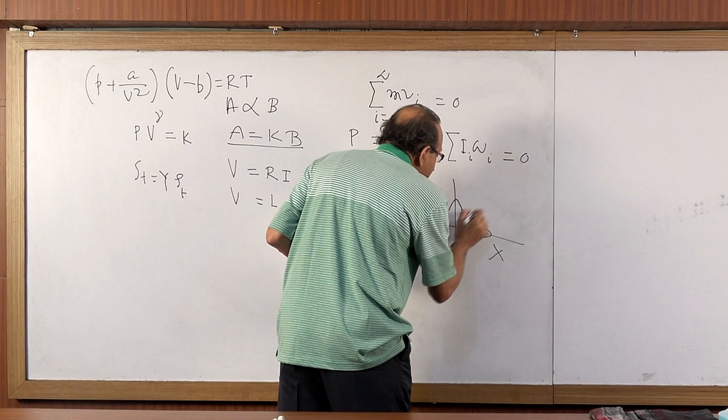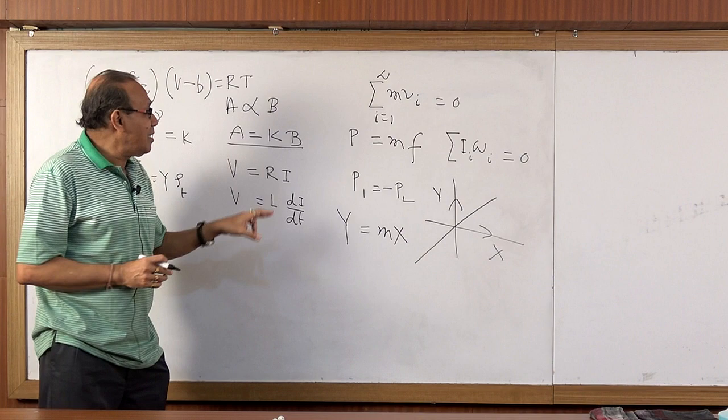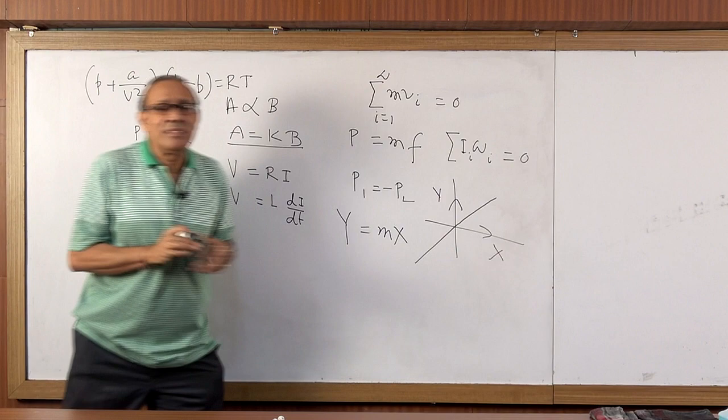Let us draw the graph. This is Y, this is X, just simple coordinate geometry. This straight line passing through first quadrant and third quadrant. Therefore, all other things are the special case of A equal to KB and Y equal to MX.